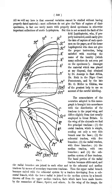Adecticus: of pupa, the state in which the pupa does not possess movable mandibles; the opposite being Decticus. Adipocytes: a major cell type of insects that stores fat body and reserves nutrients.